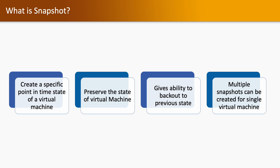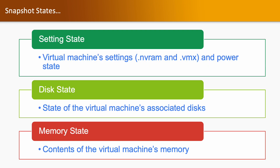What is a snapshot? A snapshot is a process of creating the point-in-time state of a virtual machine. It preserves the state of the virtual machine and gives the ability to back out to the previous state. For example, if you are installing an application or software which crashes your operating system, you can simply restore the operating system using the snapshot, and it won't take much time. You can have multiple snapshots on a single virtual machine.